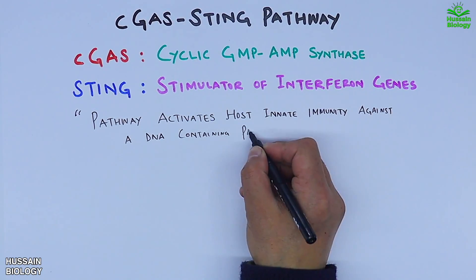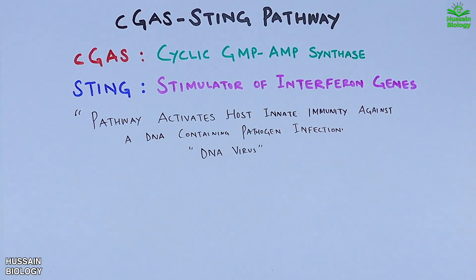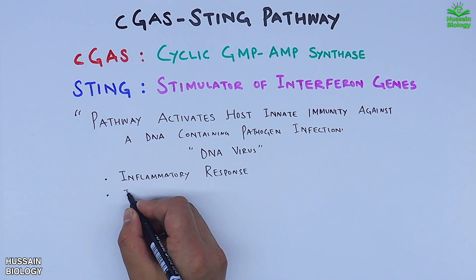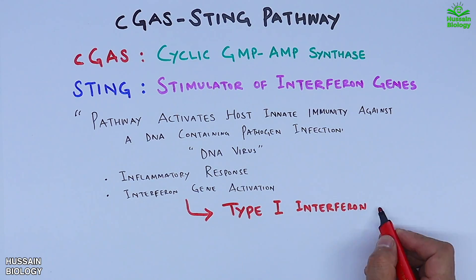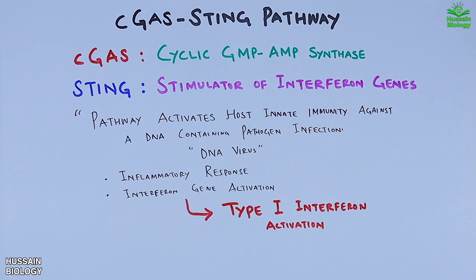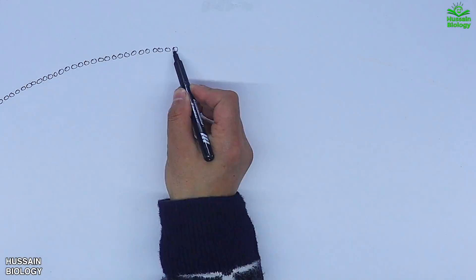Specifically for DNA virus infection, this signaling pathway produces inflammatory response and stimulation of interferon gene activation, like type 1 interferon activation. Now let's see how this STING signaling pathway is mediated.